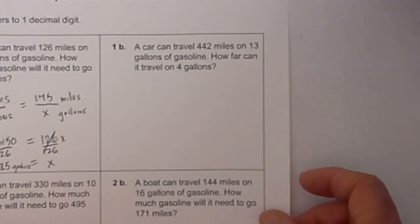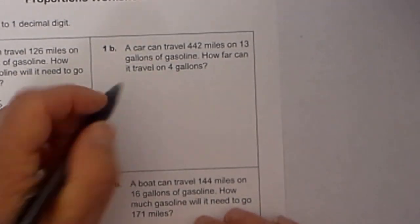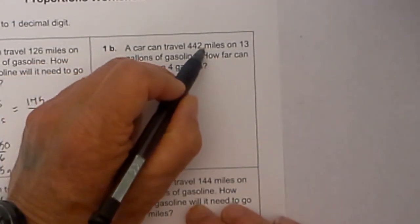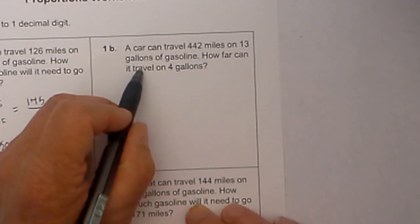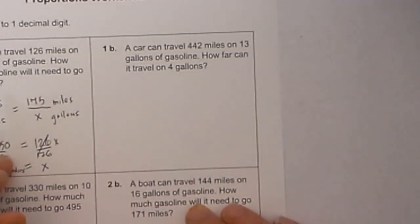Let's look at another example which is very similar. This time a car travels 442 miles on 13 gallons. How far can it travel on 4?